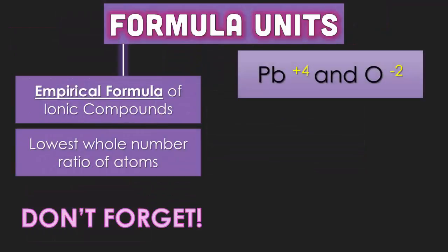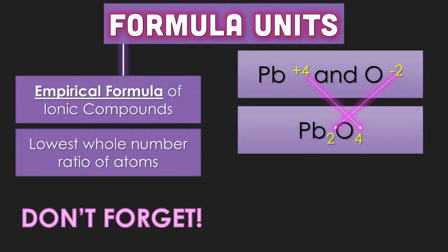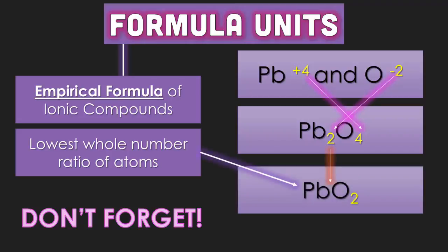Do not forget, if you are using formula units, which you are supposed to be doing, make sure your criss-cross methods come out to the lowest number. In this example, we see that we have two leads for every four oxygens. They are both even. They can be simplified to a one to two ratio. Make sure you simplify everything.